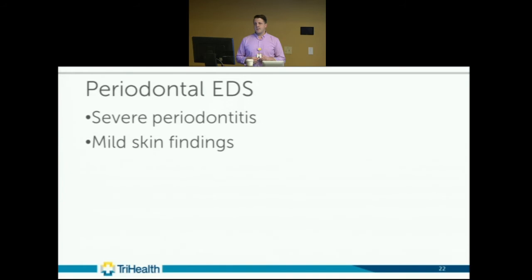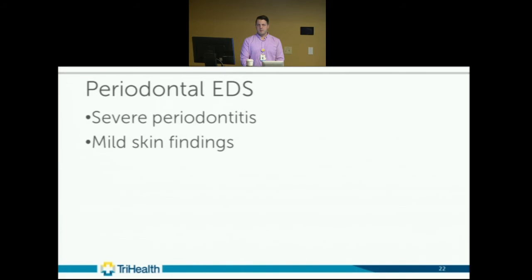Periodontal EDS patients have severe, extensive periodontitis. I recently had a medical student patient with periodontitis and some hypermobility, though he was more along the lines of hypermobility spectrum disorder — his Beighton score was not more than five and he primarily had it only in his front bottom teeth. Due to phenotypic variance, I recommended genetic testing for him.